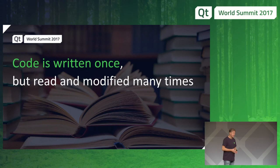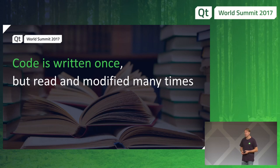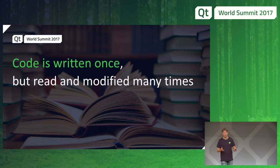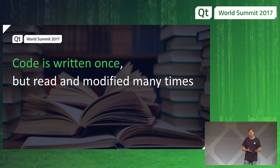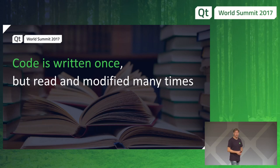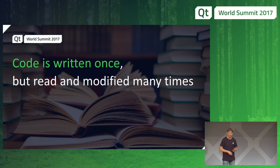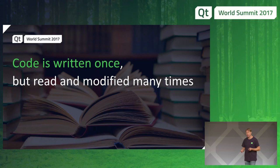A lot of code is written once, but read and modified many, many times. You need to release new versions of applications, and we all know the feeling of coming back to code two years later with no idea what you've written. Or having to debug somebody else's code — even worse. So it's important to acknowledge that code is read many times and has to be easy to do that.